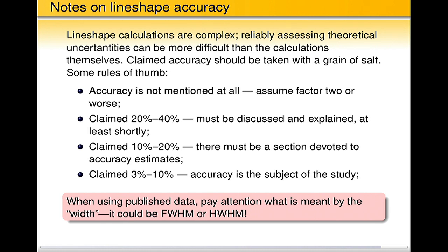Something like that, if there is a study on line broadening and there is no mention of accuracy at all, don't expect it to be more accurate than factor two. If people do claim some accuracy about 20, 40 percent give or take, it must be discussed and explained in the paper. If it's not, go back to this assumption. 10 to 20 percent, there is really must be a separate section devoted to accuracy. Again if it doesn't exist, go to here, number one, factor two.